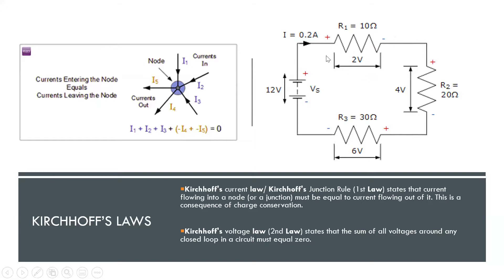The voltage loss can be calculated as current times resistance. I into R1: 0.2 times 10 is 2 volt. The current through R2 is 0.2 ampere, so 0.2 times 20 gives 4 volt. The voltage dropped across R3 is 0.2 times 30, which is 6 volt. The total voltage drop is 2 plus 4 plus 6, which equals 12 volt.